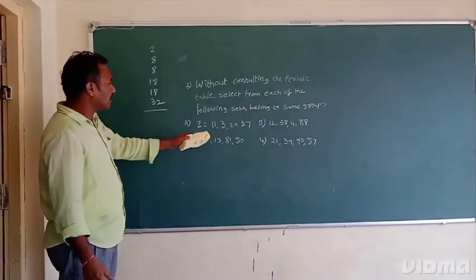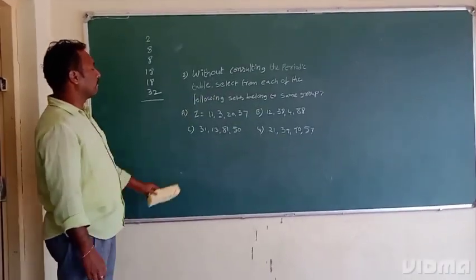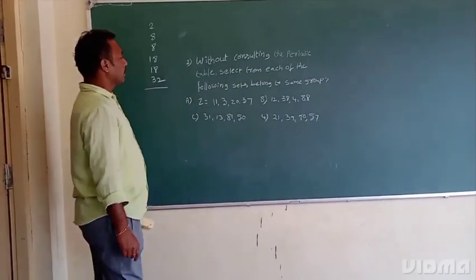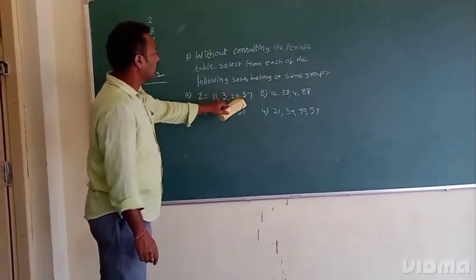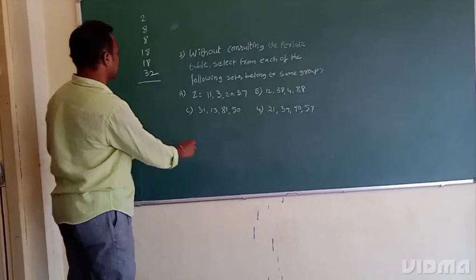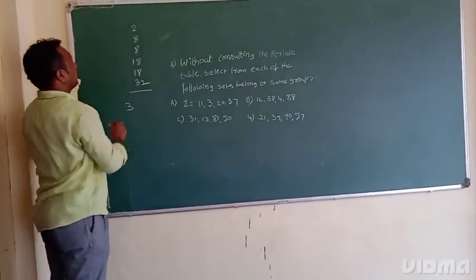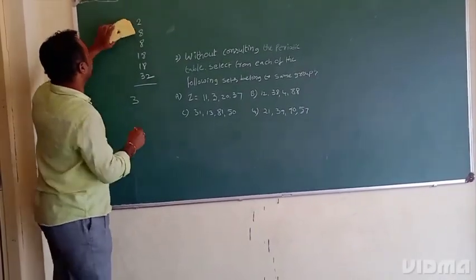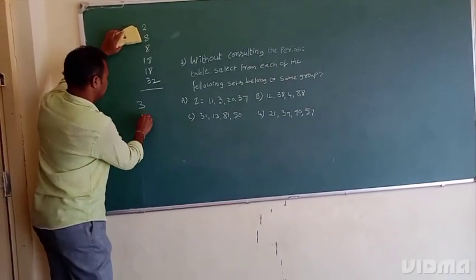Based on this, the first option is 11, 3, 20, 37. So first 3. 3 is the second period, add 8 to get 11.